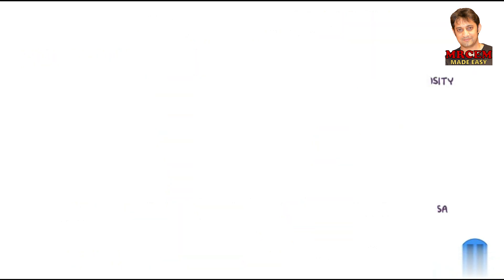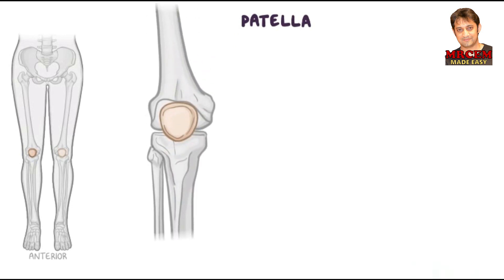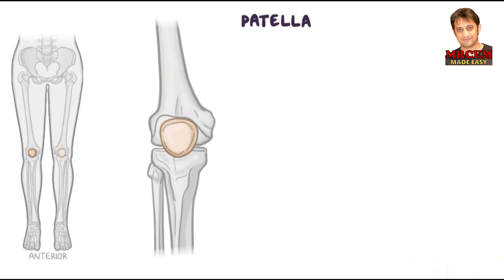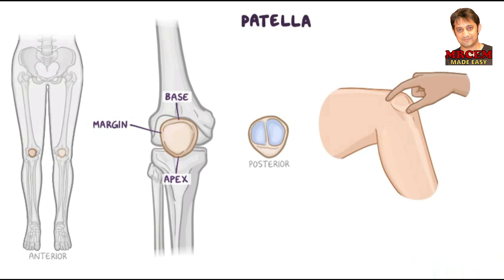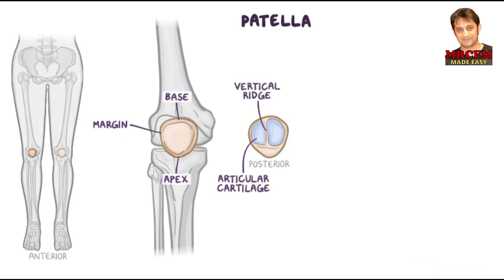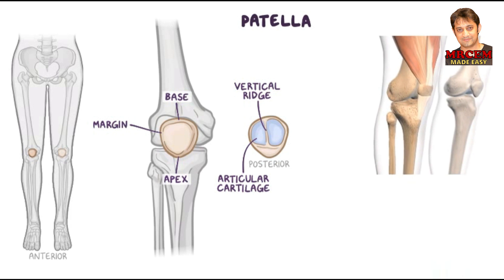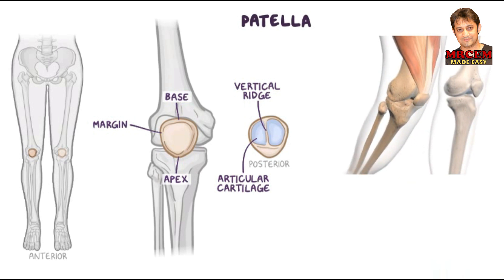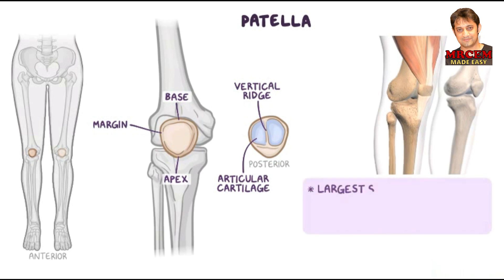The patella, or kneecap, is a triangular bone located on top and in the middle of the femoral condyles. It has an anterior and a posterior surface, a superior base, an inferior apex, and two margins. The anterior surface is smooth and palpable on the anterior part of your knee. The posterior surface is covered with thick articular cartilage to articulate with the patellar surface of the femur, and is divided by a vertical ridge into a narrower medial and wider lateral articular surface. The ridge, along with the balanced pull of the vastus muscles, helps keep the patella centered in the intercondylar groove during flexion and extension. The patella is the largest sesamoid bone in the body and provides leverage for the quadriceps during extension.